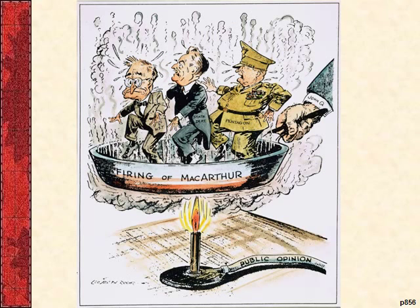There's a political cartoon from your book: MacArthur actually gets fired by Truman. When China invades, MacArthur wants to attack Manchuria and even drop atomic bombs on the Chinese. Truman won't let him. So MacArthur starts talking bad about Truman to the newspapers.